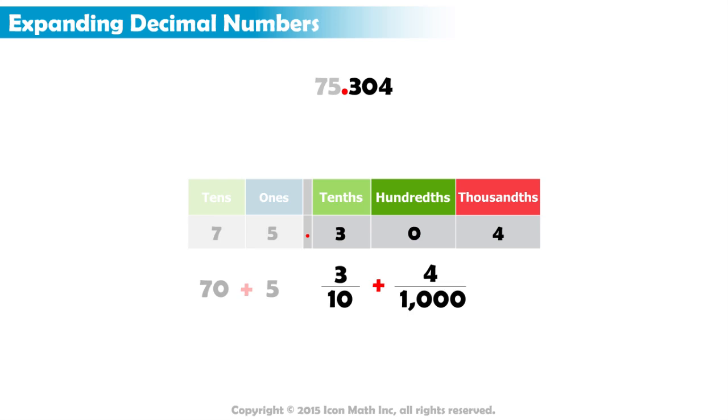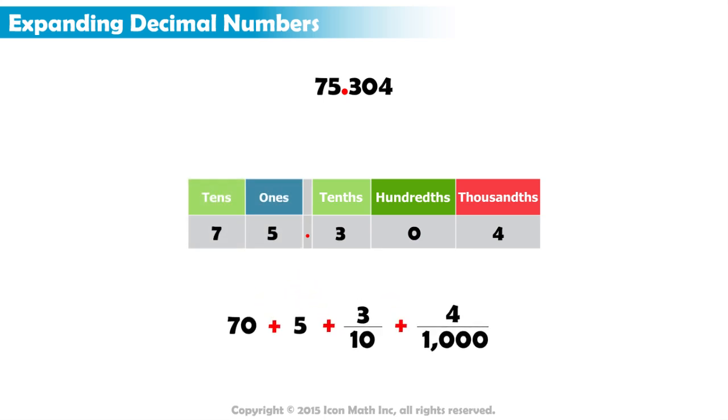Finally, to write the complete expanded form of the number, we add the decimal expansion to the whole number expansion, and we get 70 plus 5 plus 3 tenths plus 4 thousandths.